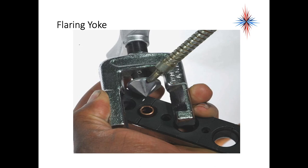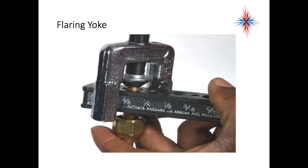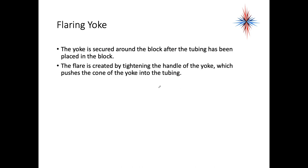You put the flare yoke on, you twist it slightly to lock it in place, and that triangle has to be exactly centered into the tip of that pipe. Don't start putting pressure on that before it's exactly centered. The yoke is secured around the block after the tubing has been placed in the block.